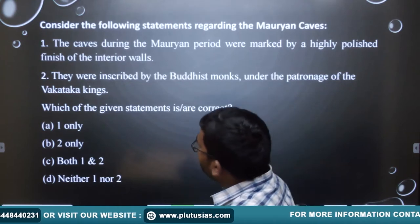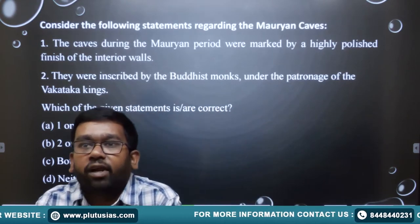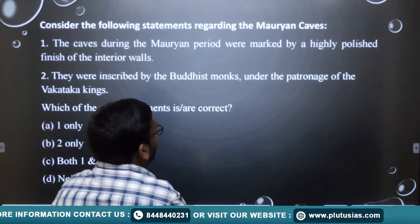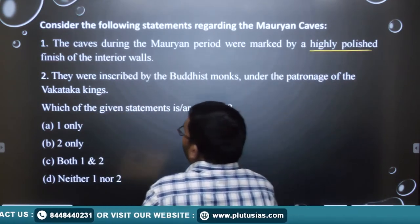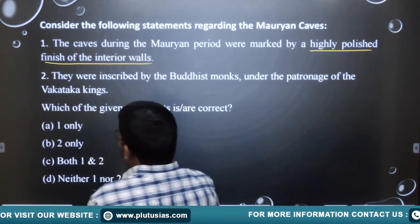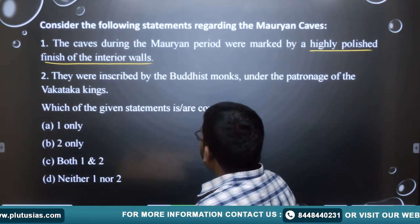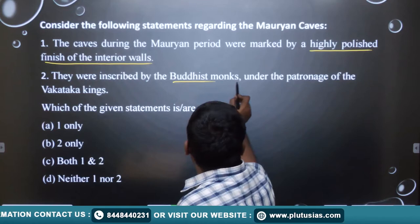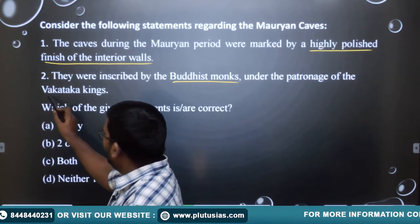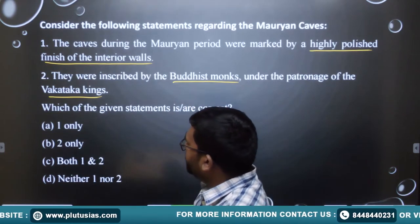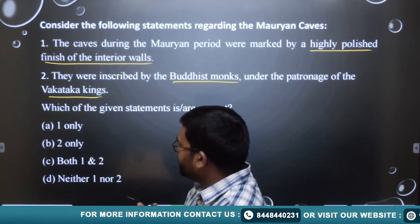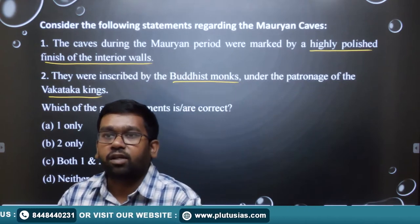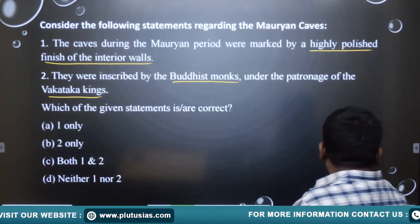Another question from previous year: consider the following statements regarding the Mauryan caves. Statement one: the caves during the Mauryan period were marked by highly polished finish of the interior walls. Statement two: they were inscribed by Buddhist monks under the patronage of the Vakataka kings. Which of the statements are true? Only one, only two, both, or neither?